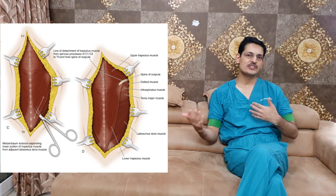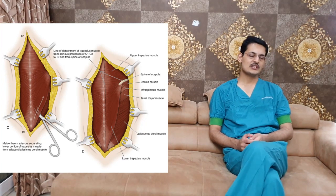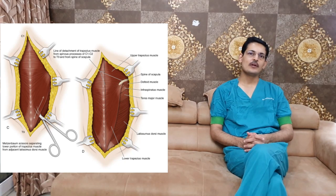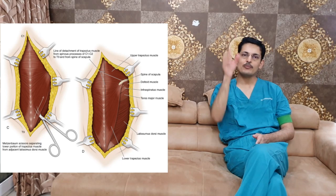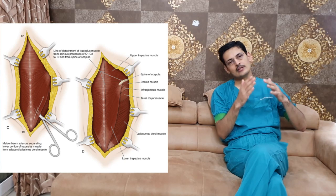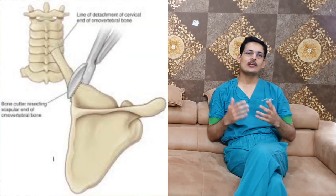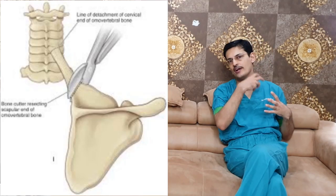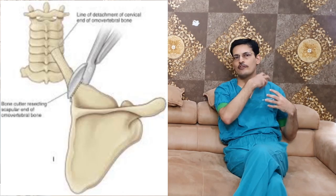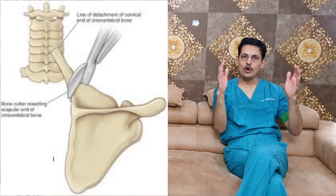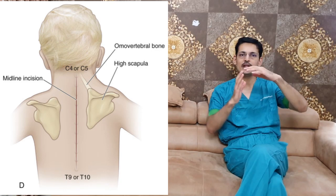There are many kinds of surgeries described for this condition. One important anatomical feature is the omovertebral bone, which is very prominent in about 50% of cases. In around 25% of patients, you will find a fibrous band similar to the omovertebral bone. Usually the scapula will be broader than it is tall — a broad and short scapula — and it will be tilted in an abnormal fashion.